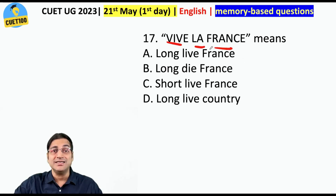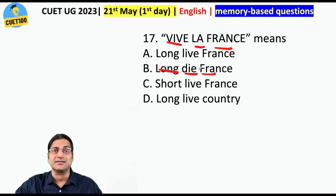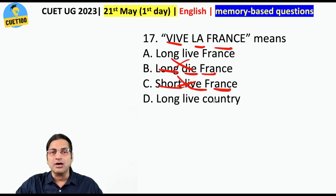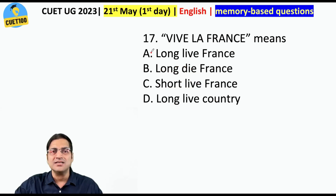'Vive la France' — even if you do not understand the meaning of this phrase, just look at the options. 'Long die France' — you need to be quite obtuse to mark this. 'Short live France' — you would need to be an antonym of smart to mark this. 'Long live country' — it does not even have the word France. So these three cannot be the answer. The answer is of course 'Long live France.' The root 'vive' relates to life — as in 'viviparous.'